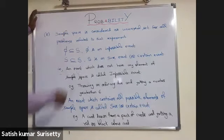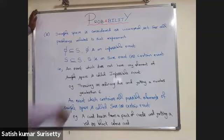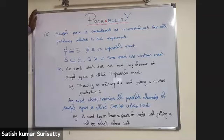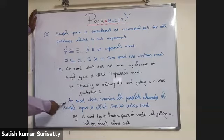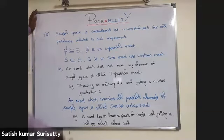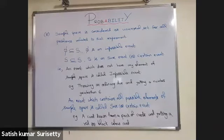An event which does not have any element of the sample space is called an impossible event. For example, throwing an ordinary die and getting a number greater than six is an impossible event. An event which contains all possible elements of the sample space is called a sure event or certain event. For example, drawing a card from a pack of cards and getting either a red or black card is a sure event.